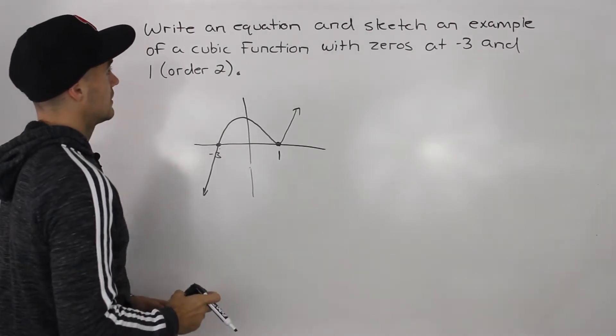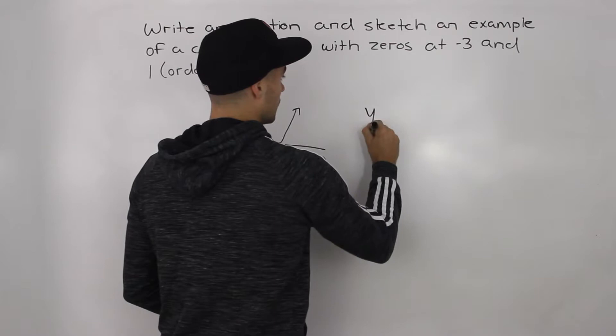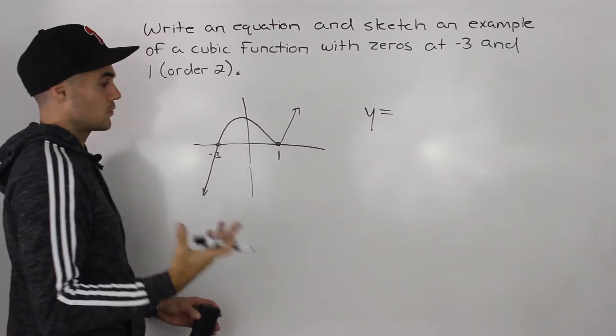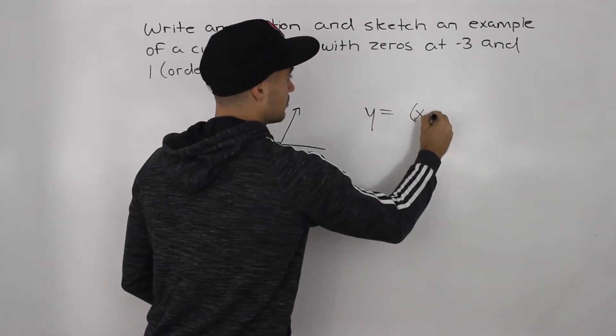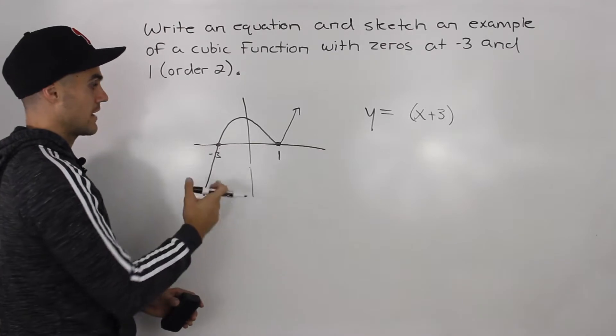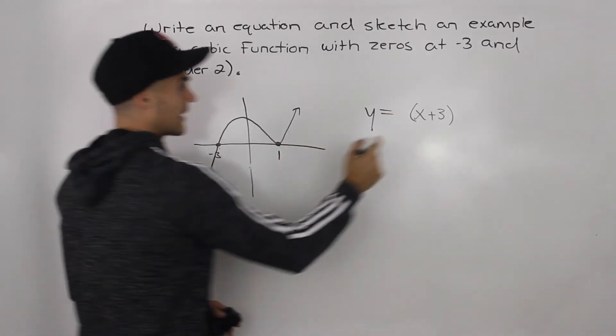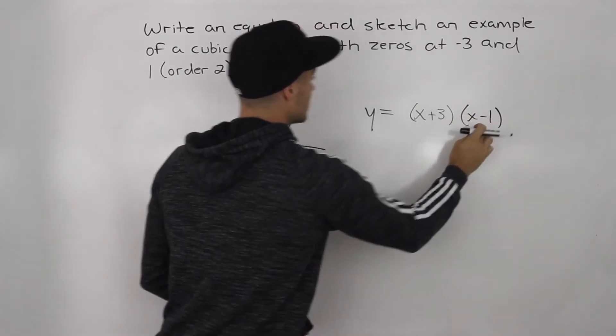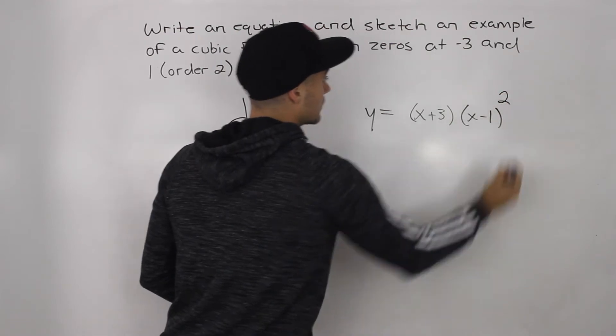And now we have to give an equation of a cubic function. So with an equation, we always start with the x-intercept. So we know one of the brackets is going to be x plus 3, right? x minus that x-intercept. So x minus negative 3 turns into x plus 3, and then x minus 1 here. And we know that this factor has an order of 2. So there's going to be like this squared here.